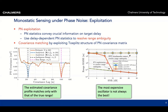With our proposed method, which performs phase noise exploitation, we can recover the correct range. An interesting takeaway is that with a perfect oscillator you would have worse performance than with an imperfect oscillator — so it is not always best to have the most expensive oscillator.